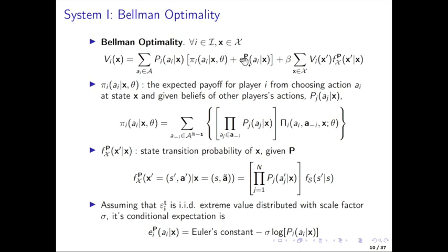Then there's the future expected value. The key difference here is that the controlled transition now depends not only on the choice probabilities for one player, but for several players. The agents take into account not only what I'm doing myself in the future, but also what all the other players are doing in the future. So it depends on the entire vector P — the entire collection. That's Bellman optimality. Let's look at all the different components: you've got the expected payoff for player i from choosing action AI at state X, given the beliefs on the other players PJ. This is really the sum over all possible actions of the potential other players, taking the joint probability for this collection of players to make a particular sequence of choices.